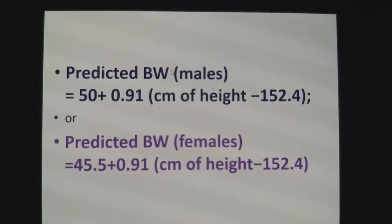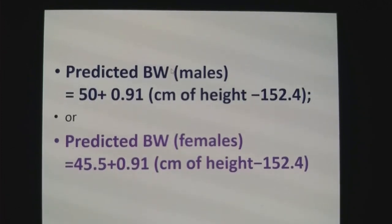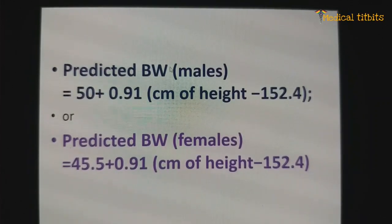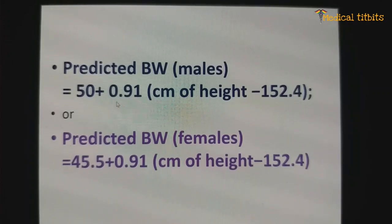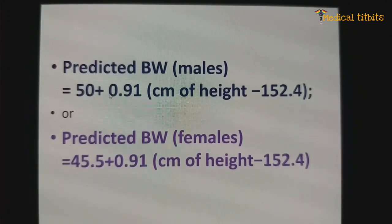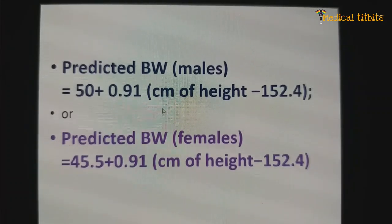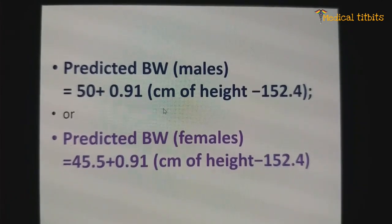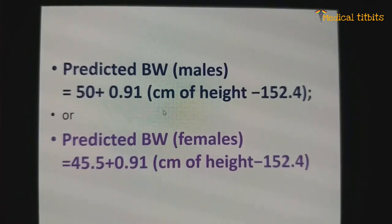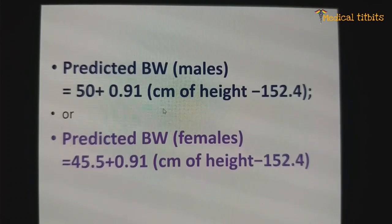Suppose you take a patient of 6 feet height — 180 centimeters — which is the upper limit of height in the Indian population. Using the formula with 150 as the reference: 180 minus 150 equals 30, and 0.9 into 30 equals 27. So that comes to 50 plus 27, which means predicted body weight is 77 kg. Tidal volume is 77 into 6. If that patient of 6 feet height has an actual body weight of 200 kg, the tidal volume as per predicted body weight is 480 mL only.